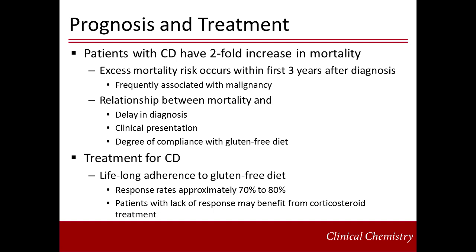Patients with Celiac disease have a two-fold increase in mortality. This excess risk is generally most evident during the first three years after diagnosis and is frequently associated with malignancies such as lymphoma. There is a relationship between an increased risk for mortality and a delay in diagnosis, more severe clinical presentation, and lack of compliance with treatment. Approximately 70% to 80% of patients will have a good response to a gluten-free diet with resolution of many of their clinical symptoms.